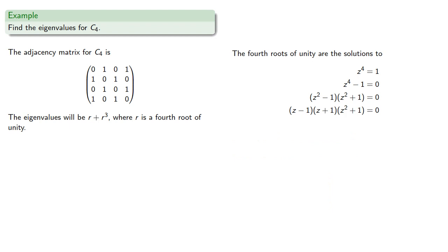Our second factor, z plus 1, will give us the root r equals negative 1. If r equals negative 1, we obtain the eigenvalue negative 2, and the corresponding eigenvector will again be the powers of negative 1.